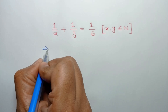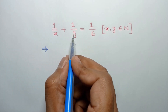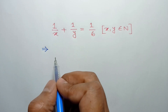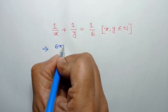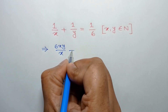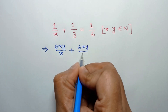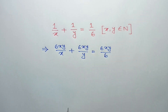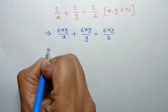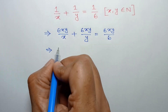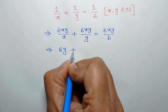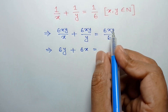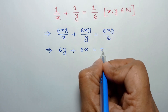The LCM of x, y, and 6 is 6xy. Multiplying both sides by 6xy, we can write 6xy over x plus 6xy over y is equal to 6xy over 6. This x and x will cancel out, leaving 6y, and this y and y will cancel out, leaving 6x. And 6 and 6 will cancel out, leaving xy.